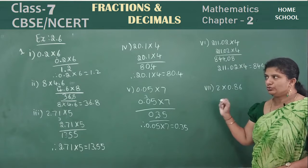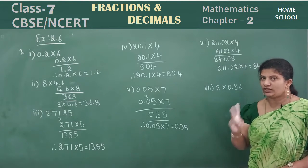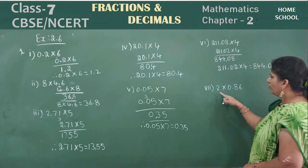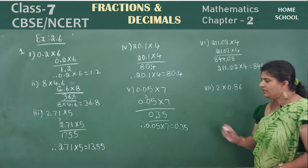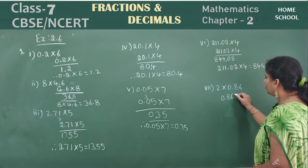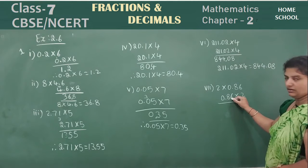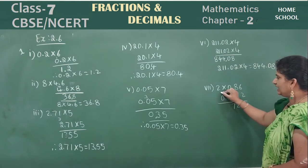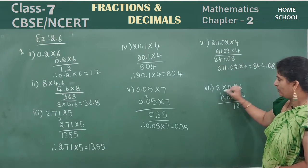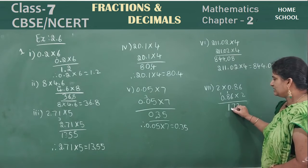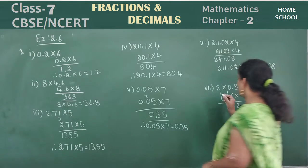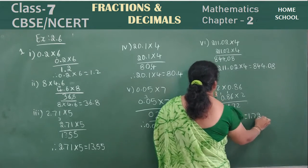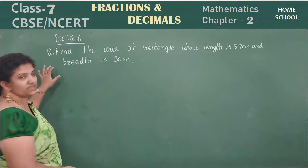So, children, do all these decimal multiplications two times today. Last one: 2 into 0.86. You can multiply like this — 2 sixes are 12, carry 1. 2 eights are 16, plus 1 is 17. 2 into 0 is 0, 0 plus 1 will be 1. That is, 1.72 is your answer. Therefore, 2 into 0.86 is equal to 1.72.